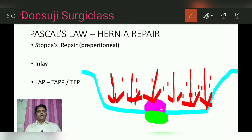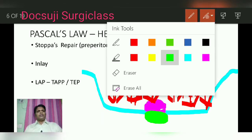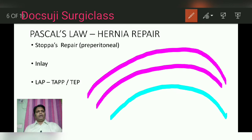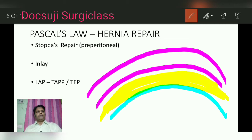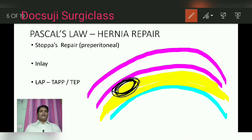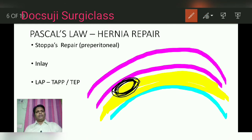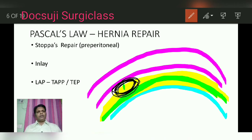For example, in Stoppa repair: the blue color is the peritoneum, the anterior abdominal wall is shown, and the yellow space is the preperitoneal space. The black color represents the hernia defect. According to Pascal's law, if you keep a mesh in the preperitoneal plane — posterior to the defect — the intra-abdominal pressure will be exerted against it.